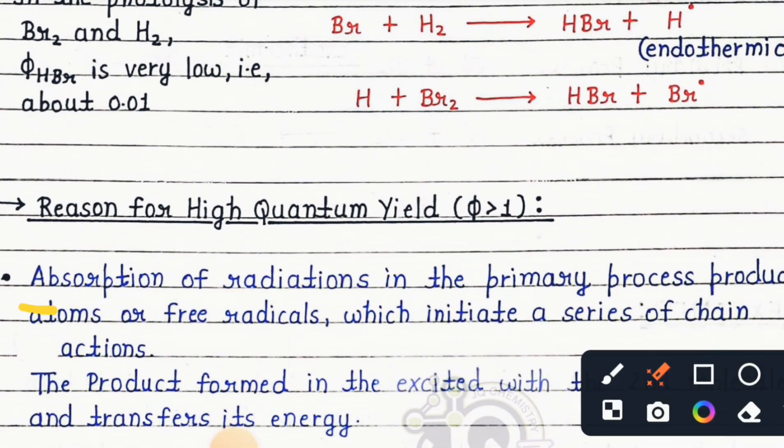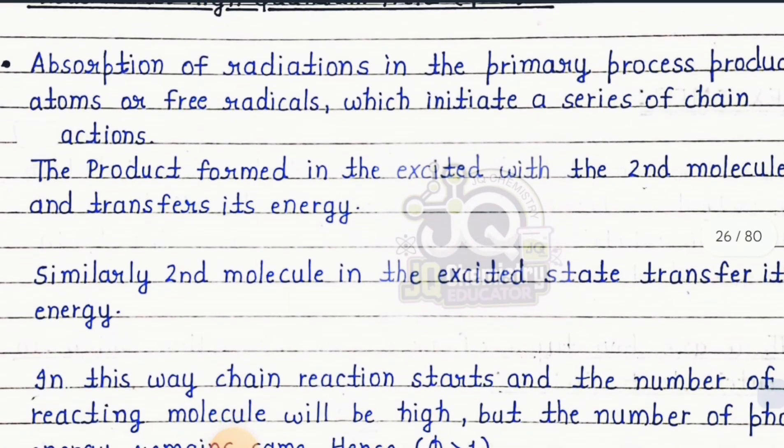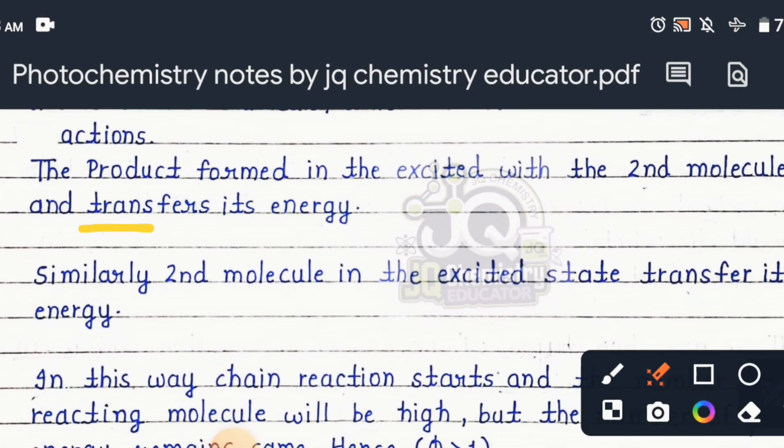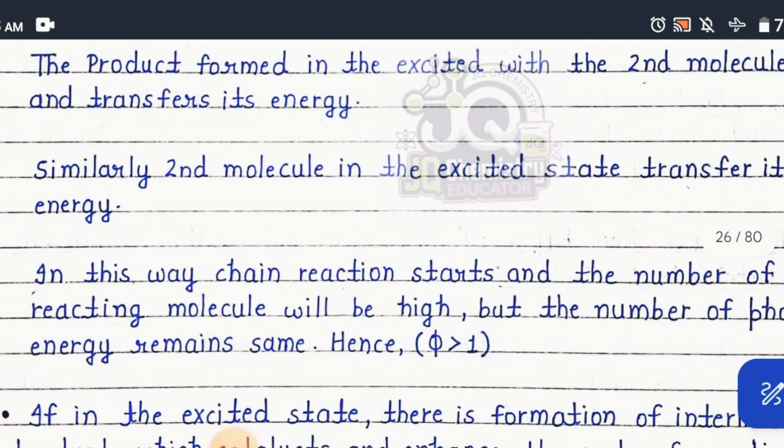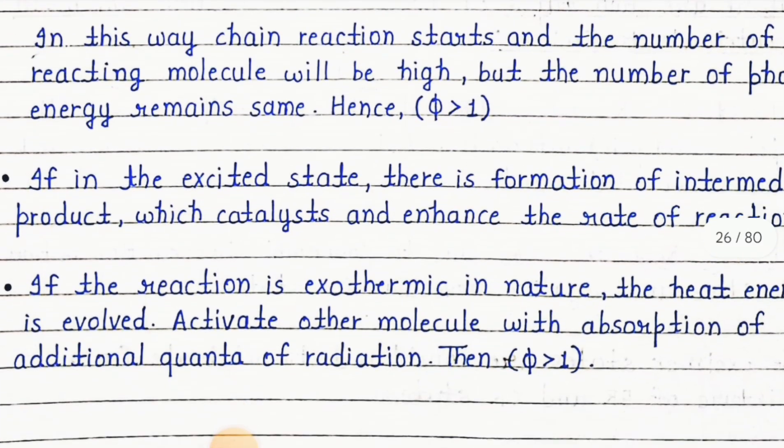When φ > 1, absorption of radiation in the primary process produces atoms or free radicals which initiate a series of chain reactions. The product formed in the excited state with the second molecule transfers its energy. Similarly, the second molecule in the excited state transfers its energy. In this way, a chain reaction starts and the number of reacting molecules will be high, but the number of photons remains the same, hence φ > 1.